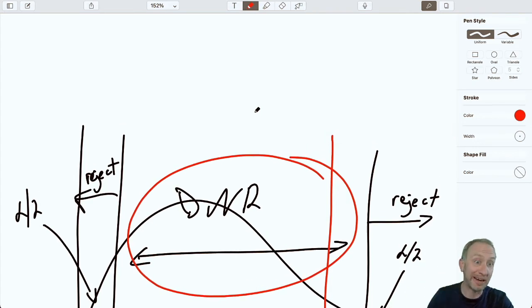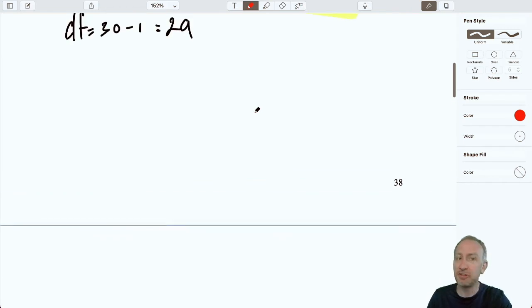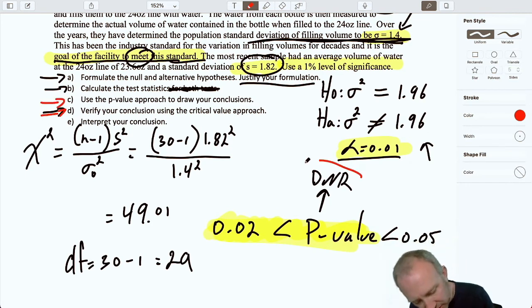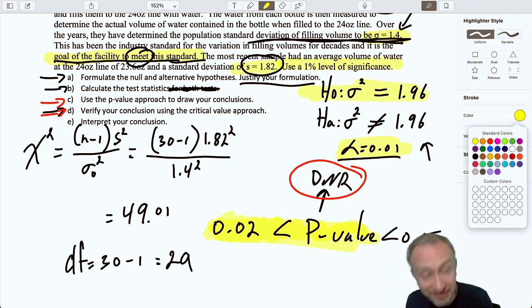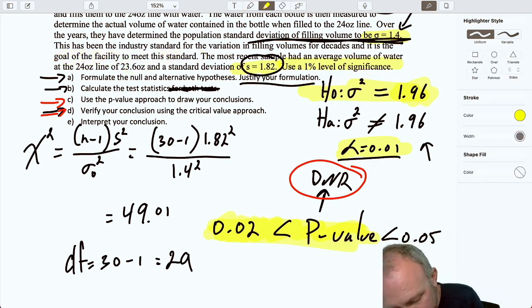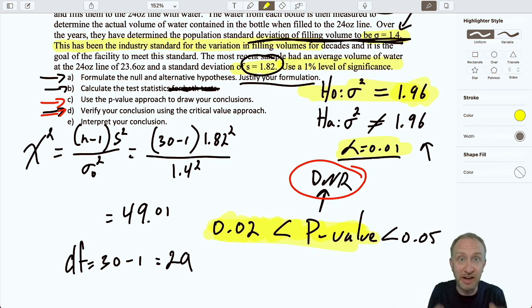We've gone through, we've got our p-value and critical value. Both of those lead us to a failure to reject, which means our evidence supports the null hypothesis, which means that we have evidence to show that we are achieving our goal of that standard deviation or that variance of 1.96. So we have evidence to show that we are meeting this industry standard for the variation in filling volumes. Our evidence shows that we are achieving this industry standard for the variation in filling volumes.